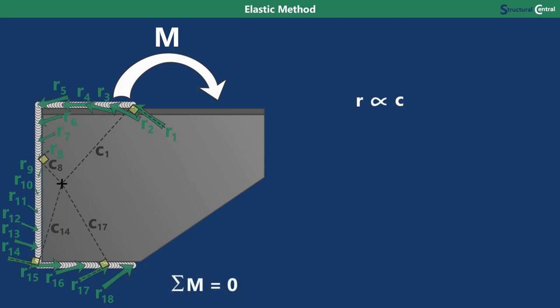Equilibrium will be met when the moment from all of the reactions from every point along the weld is equal to the applied concentrated moment. Determining the reactions at every point in order to satisfy these requirements may sound complicated, but the formulas are actually pretty straightforward. The reaction per unit length R at any point along the weld is equal to the concentrated moment M times the distance from that point to the centroid C, divided by the polar moment of inertia IP.